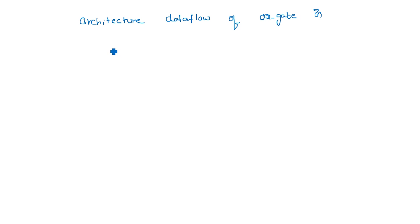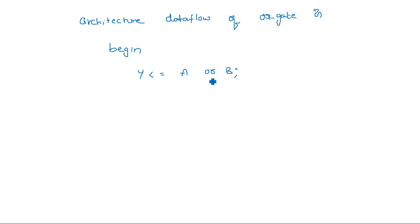Y is assigned with A OR B — that means the OR operation is performed and the result is stored in Y. Then simply end with the architecture name, which is data_flow. So in data flow modeling we are writing the boolean expressions directly as output assignment.